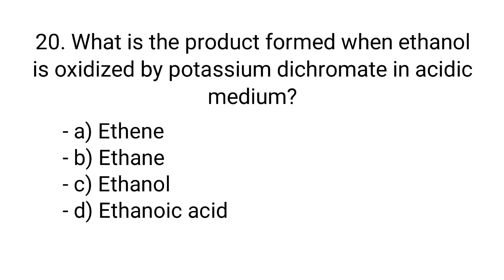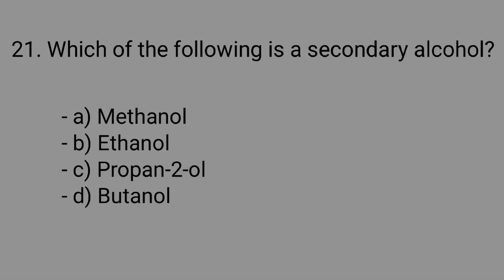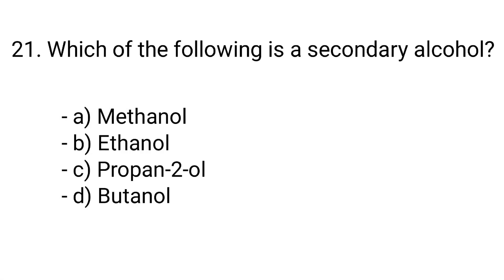Question number 20. What is the product formed when ethanol is oxidized by potassium dichromate in acidic medium? Option A: Ethene, B: Ethane, C: Ethanal, D: Ethanoic acid. The correct answer is option D, Ethanoic acid.